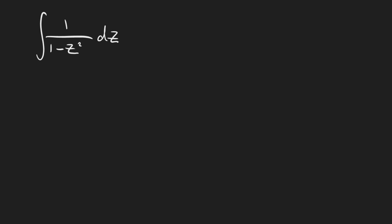I'll write that formula here. This is just going to be cosh squared of x minus sinh squared of x, and that's going to equal one. Just like how we had an analogous version of this equation for trig sub, this is the one you want to pay attention to for hyperbolic trig sub. Making use of this equation is going to make this integral a whole lot easier than standard trig sub.